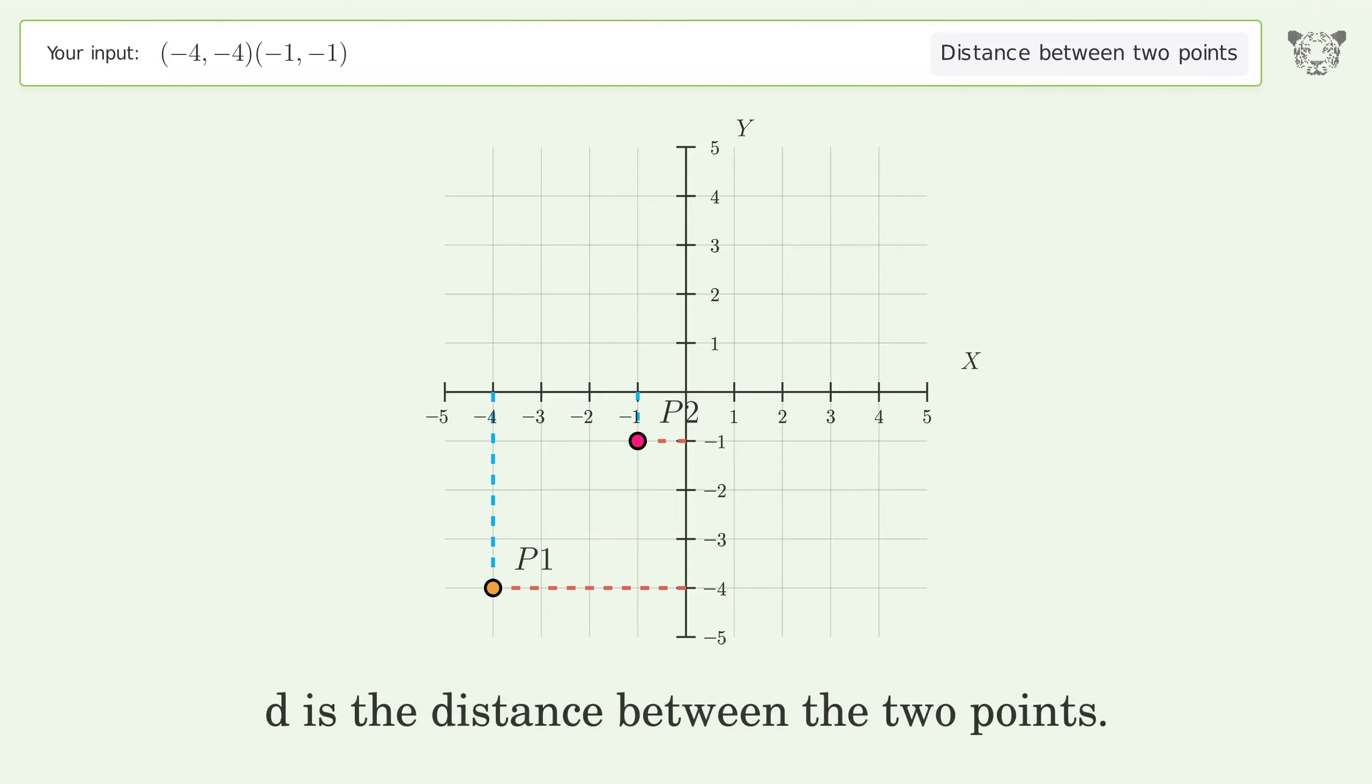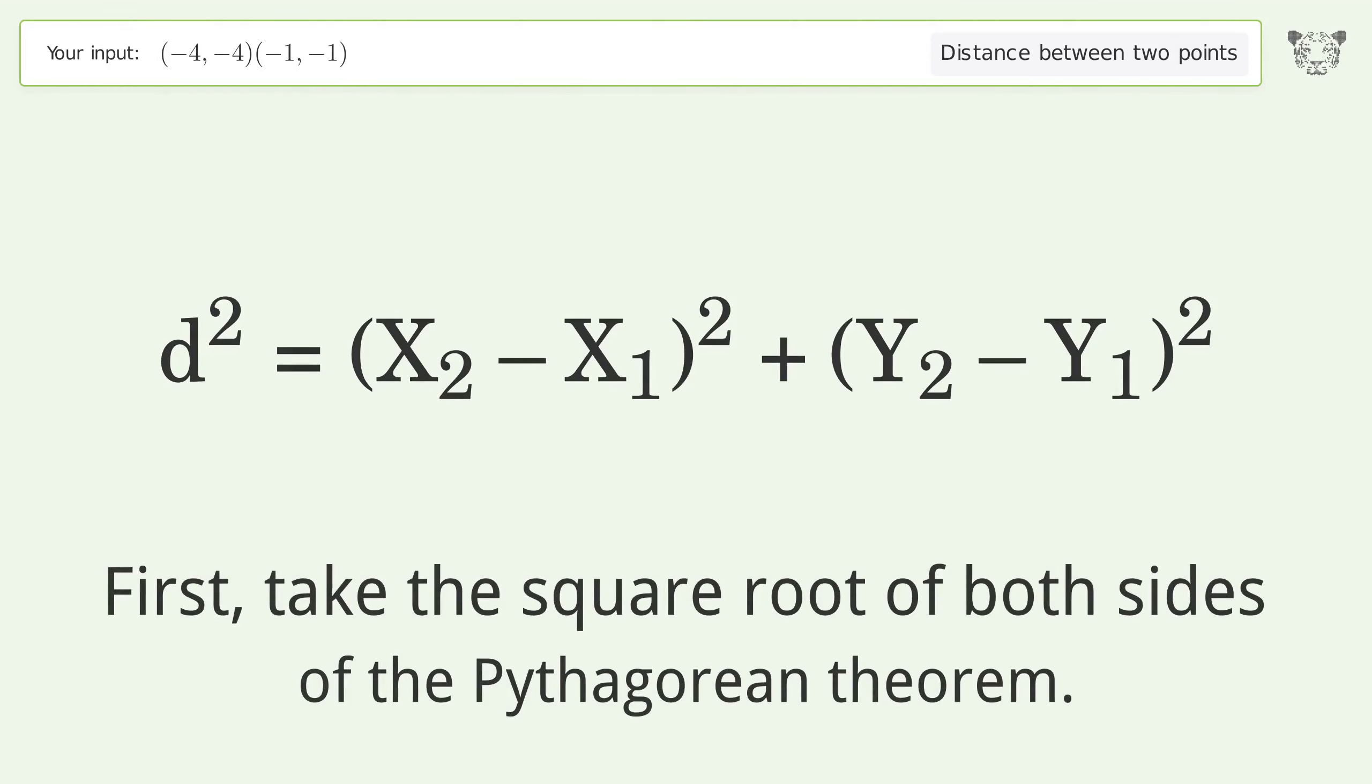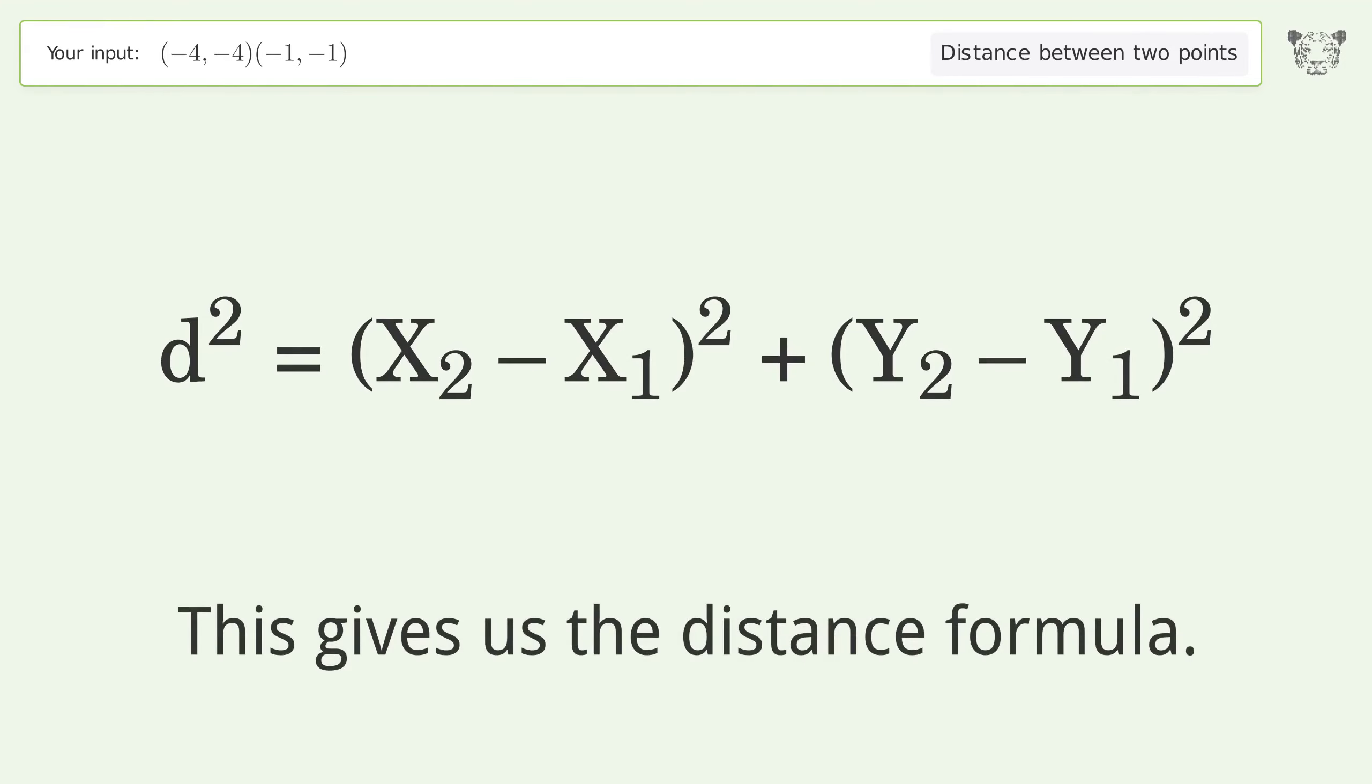d is the distance between the two points. First, take the square root of both sides of the Pythagorean theorem. This gives us the distance formula.